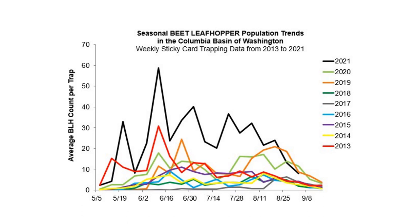Large yearly variations in the size of insect populations are very common. This is no surprise because insect survival and reproduction rates are very much affected by weather, especially temperature and precipitation, which comes in patterns that differ every year.